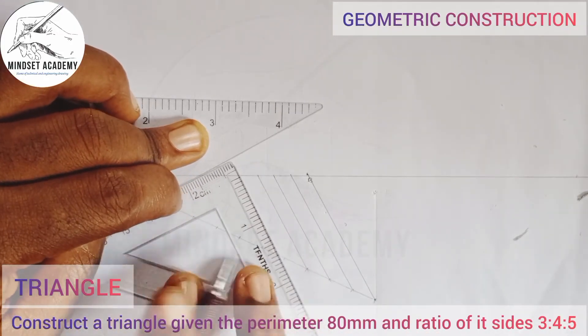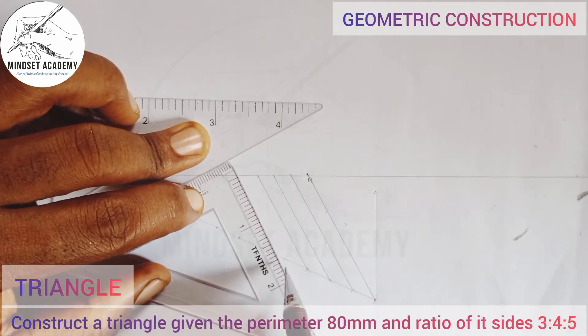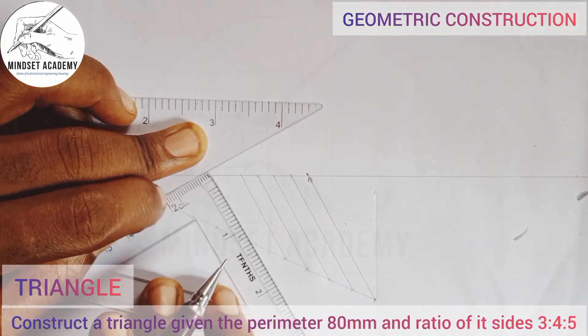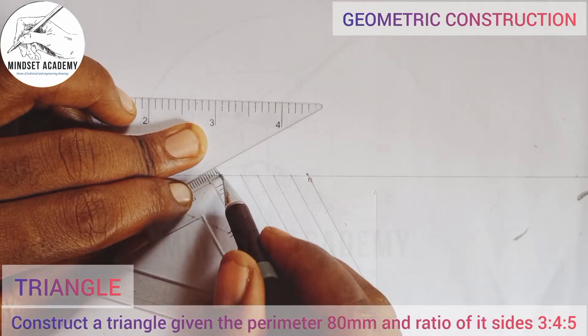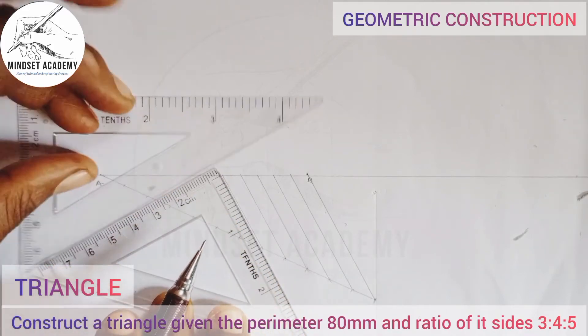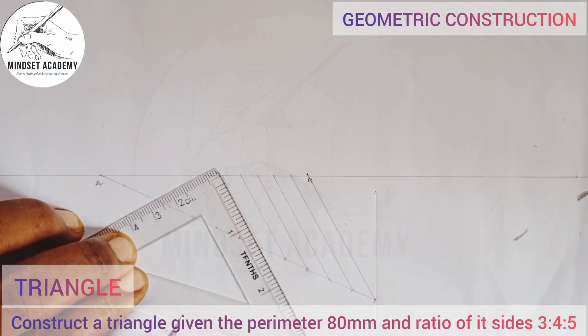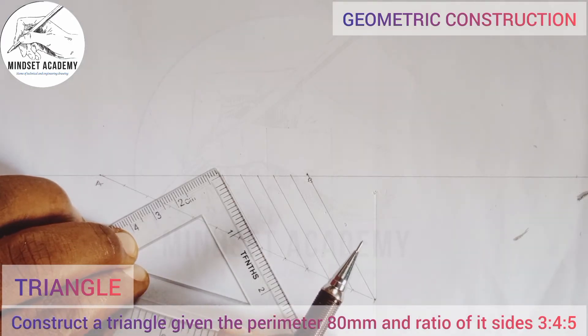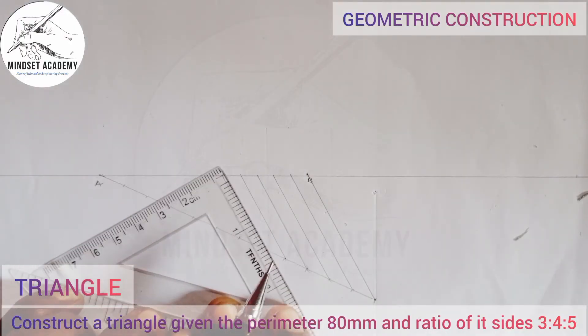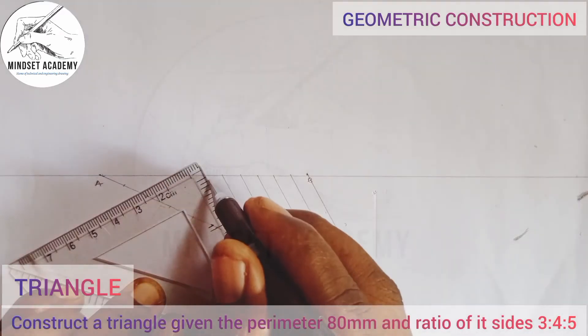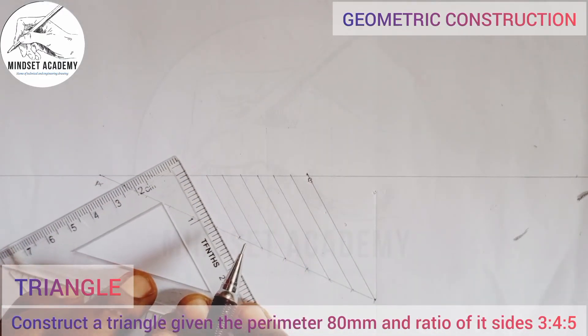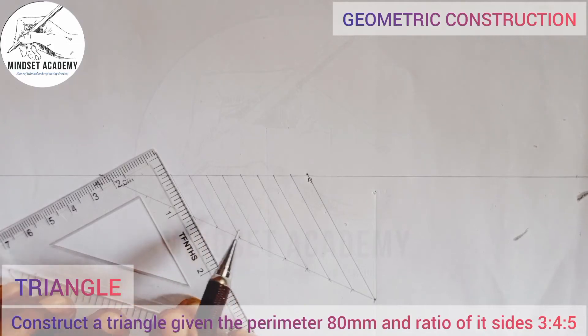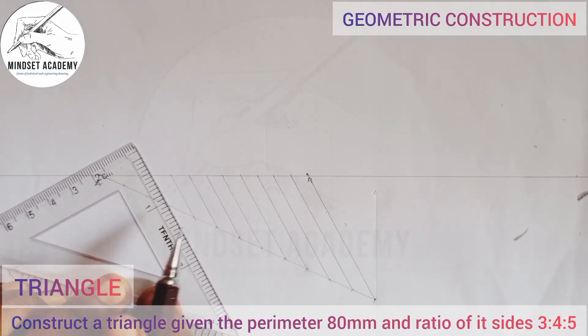Continue moving it to each subsequent point. Since there's no more space on the set square, reposition it and continue moving it to each division point, drawing parallel lines through all the divisions.